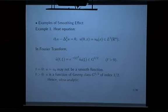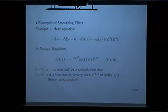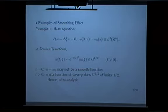The heat equation is a very elementary example of an equation which has smoothing effect. We know the solution of this equation given in a certain form if we consider the Fourier transformation. Looking at this solution formula, we immediately conclude that at t equal to 0, the initial data u0 may not be a smooth function, but as soon as t becomes positive, the solution becomes a very smooth function — more precisely, a function of Gevrey class of index one-half.